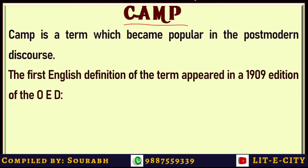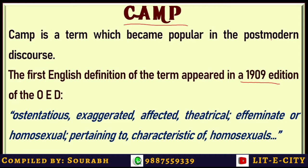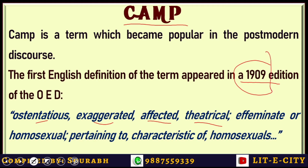The first English definition of CAMP appeared quite early in the 1909 Oxford English Dictionary. That definition described CAMP as ostentatious, exaggerated, affected, and theatrical. These adjectives are generally applied whenever we talk about the post-modern effect of arts and literature. Also included was 'effeminate or homosexual, pertaining to characteristics of homosexuals' — quite early, in 1909, when there was little scope for Queer Studies or gender-bender discourse.